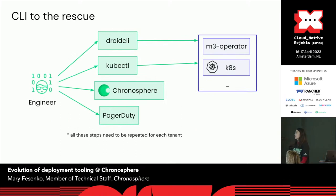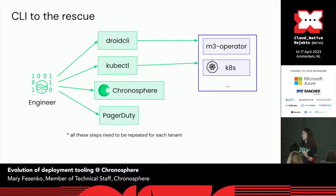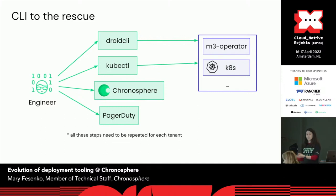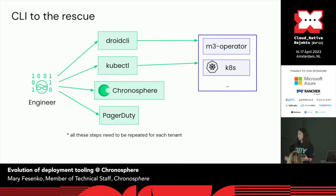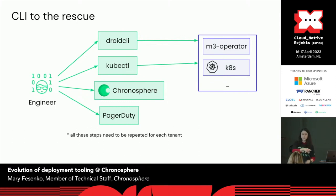You as an engineer had to do all the dirty work. First, you'd use kubectl to find the services you're deploying, check that old pods are being killed and new pods are coming up healthy. Then you'd go to your favorite dashboards in the Chronosphere product and check: is CPU suddenly spiking, or is the error rate increasing? Then you'd look at alerts and PagerDuty for any new incidents. You'd wait five to ten minutes, decide everything is healthy — and then the worst part: you have to repeat all of this from the beginning for each tenant.